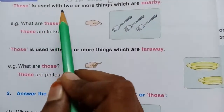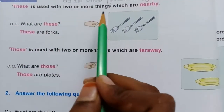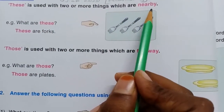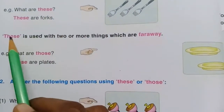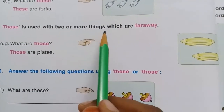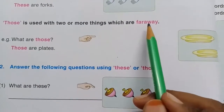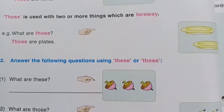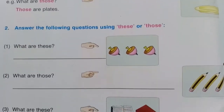So 'these' is used with two or more things which are nearby. 'Those' is used with two or more things which are far away. Understood. Let us see here.